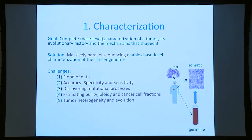We would like to infer the evolutionary history and mechanisms that shaped a tumor's genome — it's like archaeology: we get a sample today, but using those mutations we can infer what the history of the tumor was. In some cases we get multiple time points, so we can actually measure what happened during different stages of cancer evolution. Massively parallel sequencing, also known as next-generation sequencing, enables base-level resolution.